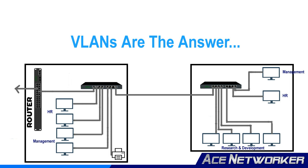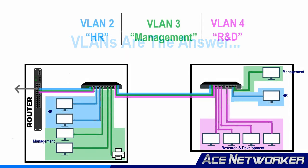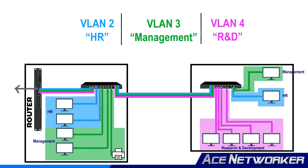You can configure multiple VLANs on your network — one for HR, one for management, one for research and development, and one for any other groups. Those VLANs can't communicate directly with each other or access each other's devices and resources. You can configure VLANs within the switch programming on each layer 2 device, dividing a single physical switch into multiple VLANs.